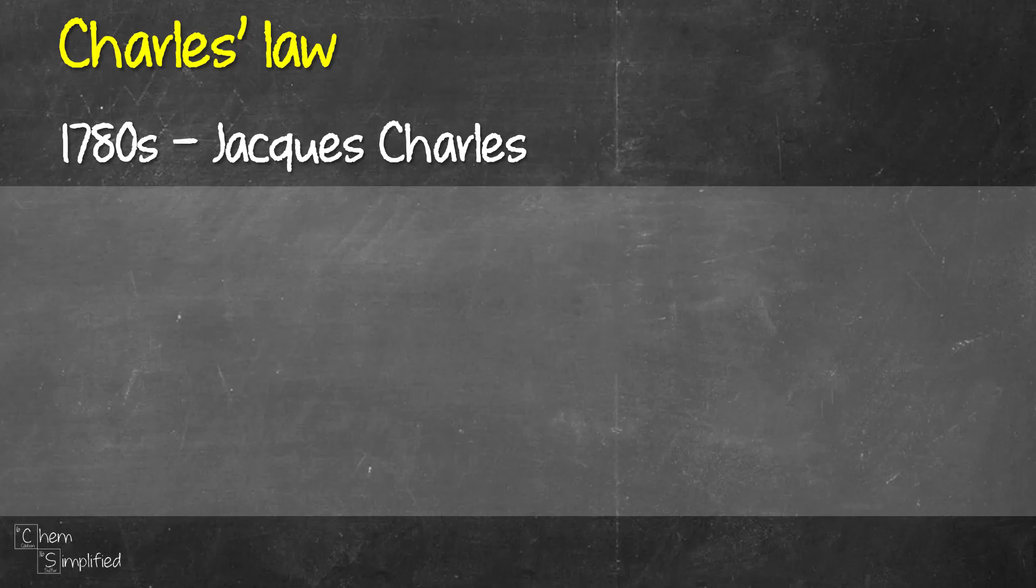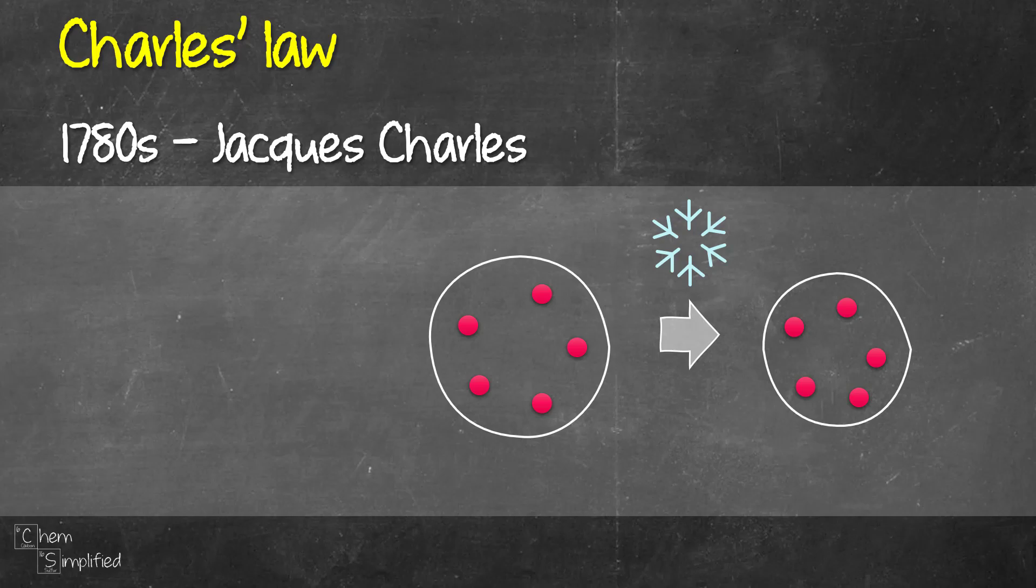This law describes the relationship between the temperature and volume of the gas. Let's say we have a ball and we inflate it with some gas inside our house. Now imagine we walk outside of the house and it's freezing cold outside. What happens is the ball that we inflated inside the house is going to deflate a little. Note that the amount of the gas stays the same. It's just that the ball shrunk a little bit. This is because when the temperature decreases, the volume will decrease as well.